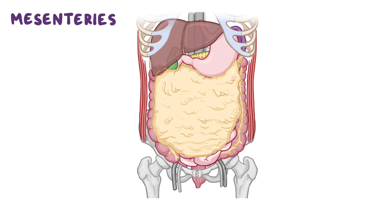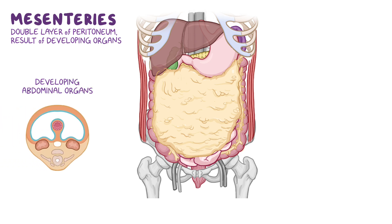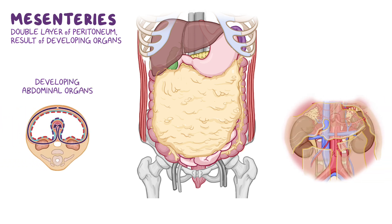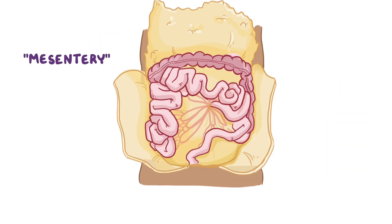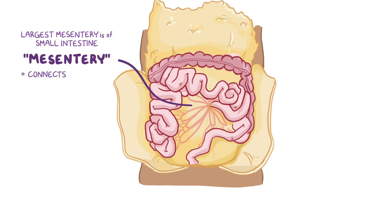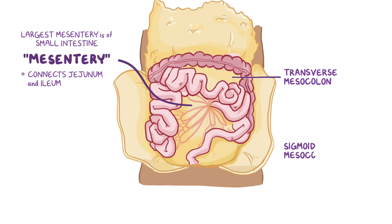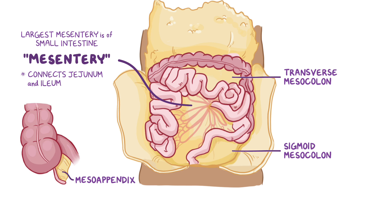Now let's talk about the mesenteries within the abdomen. A mesentery is a double layer of peritoneum that occurs as a result of the developing abdominal organs and is continuous with the parietal and visceral layers of peritoneum. The aorta, inferior vena cava, and the nerves and lymphatics are all posterior to the peritoneum, so the mesenteries allow for passage of neurovasculature from the body wall to and from their respective organs. The largest mesentery in the body is the mesentery of the small intestine, which connects the posterior abdominal wall to the jejunum and ileum. Next is the transverse mesocolon, which connects the transverse colon to the posterior abdominal wall. Then there's the sigmoid mesocolon, which connects the sigmoid colon to the posterior wall of the abdomen and pelvis. Finally, there's the mesoappendix, which connects the ileum to the appendix.